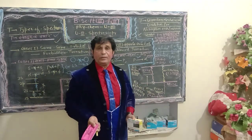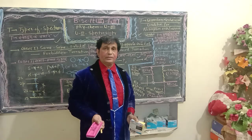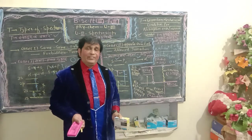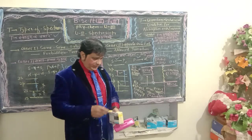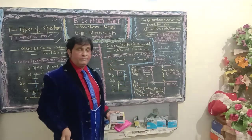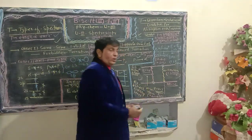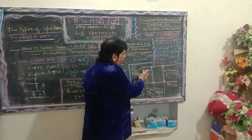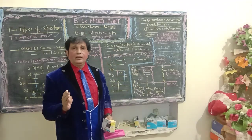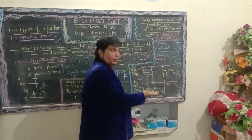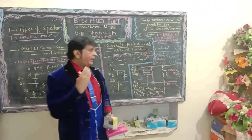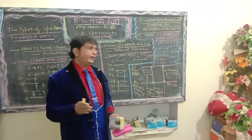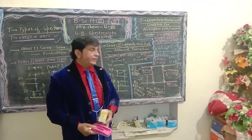Now let us discuss the quantum mechanical condition of absorption and emission spectrum. On the blackboard I have drawn the energy level diagram with E1 denoting the lower energy level and E2 denoting the higher energy level. When an electron is given extra energy — equal to E = hν — it jumps from the lower energy level E1 to the higher energy level E2, and the spectrum produced on the photographic plate is known as absorption spectrum.